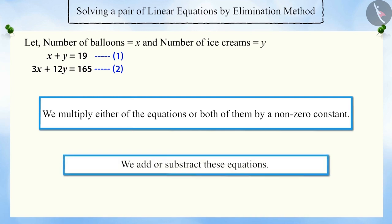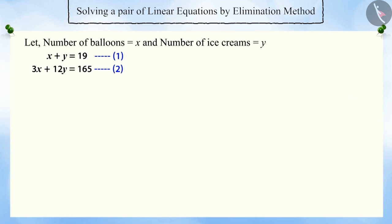You can see that it will be easier to multiply a constant in equation 1 because here the coefficient is 1 for both the variables. In equation 2, the coefficient of x is 3. Hence, in order to make the coefficient value of x equal in both equations, we will multiply equation 1 by 3.